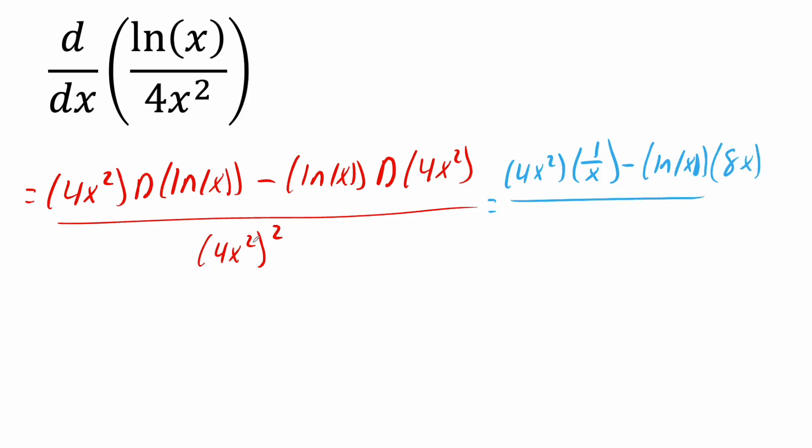So we can square both pieces. So 4 squared is 4 times 4 is 16, and then x squared, raise it to 2, you multiply 2 times 2 is 4, so you get x raised to 4.